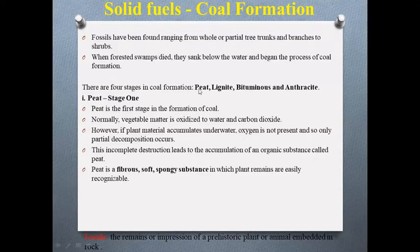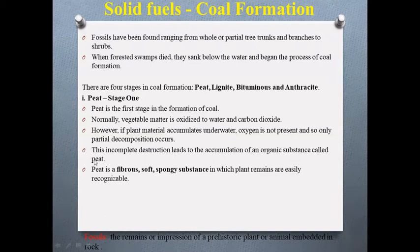The four stages of coal formation are peat, lignite, bituminous, and anthracite. Peat is the first stage. Vegetable matter normally oxidizes to water and carbon dioxide, but when plant material accumulates underwater, oxygen is absent so only partial decomposition occurs. This leads to the accumulation of organic substances called peat. Peat is fibrous, soft, and spongy, in which plant remains are easily recognizable. It contains a large amount of water and must be dried before use. Formation of peat takes around one thousand years.